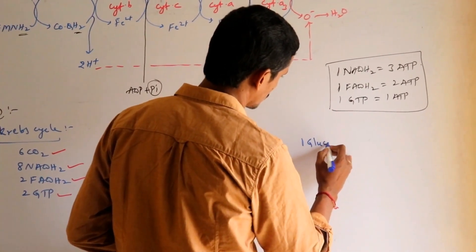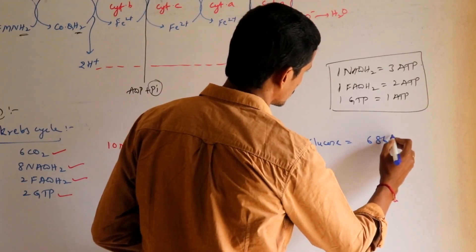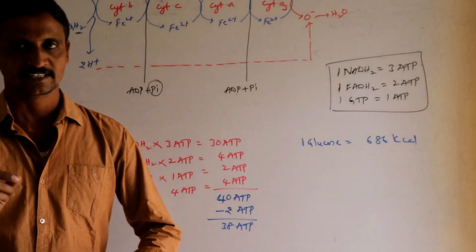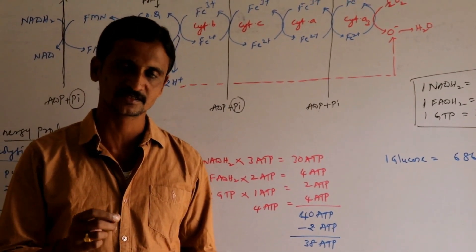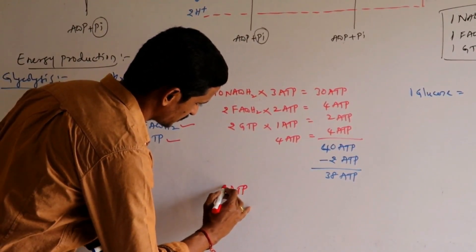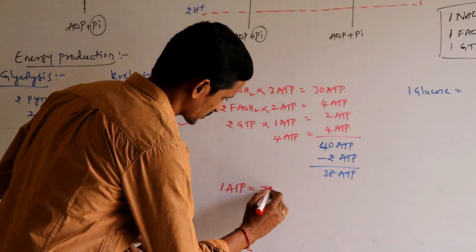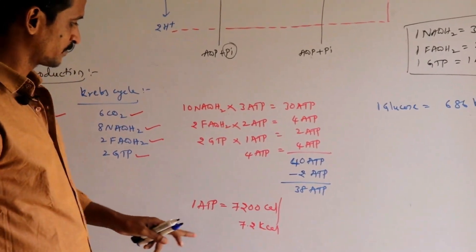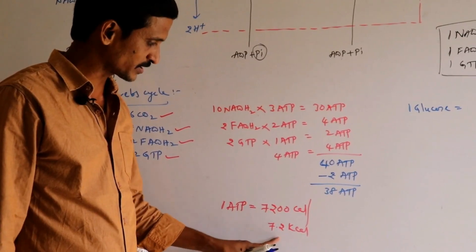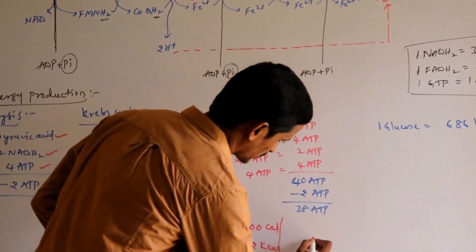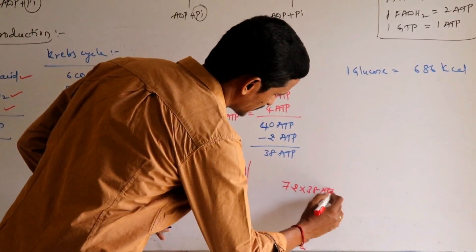When one glucose molecule is oxidized completely, 686 kilocalories of energy is released. We got 38 ATPs. When each ATP is hydrolyzed, it produces 7200 calories — that is 7.2 kilocalories. So 7.2 × 38 ATPs leads to 273.60 kilocalories stored as chemical energy in ATP form.